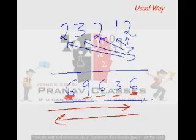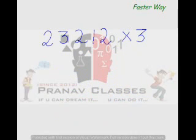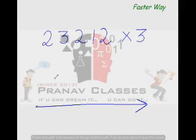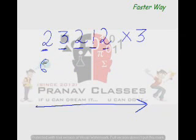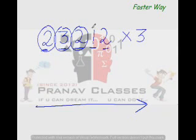The faster way of multiplying is from left to right — you multiply each and every digit with 3. So 2×3 is 6, 3×3 is 9, 2×3 is 6, 1×3 is 3, and 2×3 is 6. Your answer is 69,636. You don't even have to write it down — the moment you see the question, you can start saying the answer.